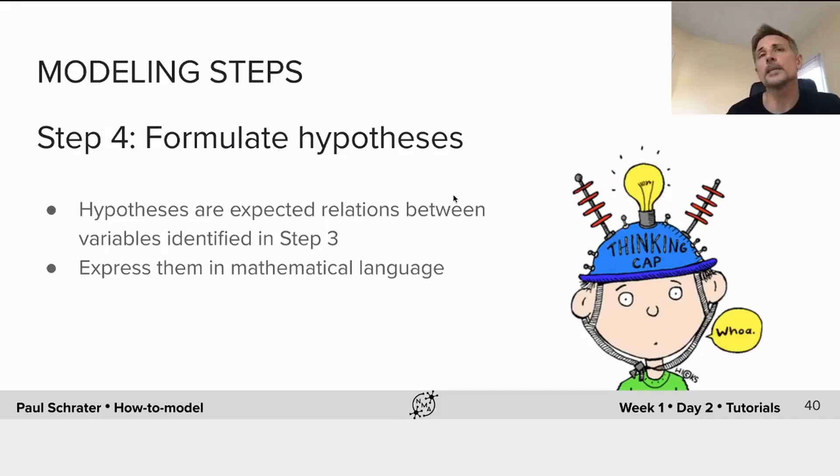Each possible explanation we generate is its own hypothesis, and it deserves its own model. So what we're going to do is focus on making a model per hypothesis, where each hypothesis expresses a way in which we think the illusion might occur.